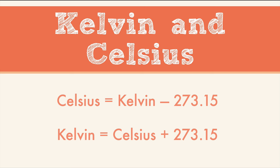For example, 20 degrees Celsius is 293.15 Kelvin. And make sure you don't say degrees Kelvin. It doesn't actually use degrees. It's just Kelvin.